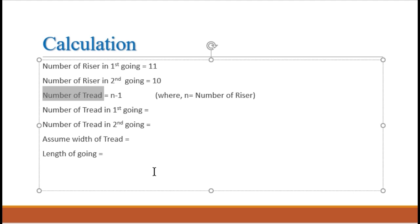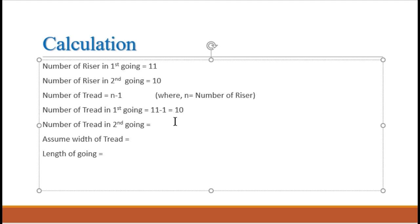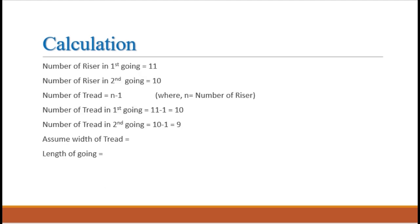Now, the number of treads in the first going. The number of treads is calculated as n minus 1, where n is the number of risers. In our first going, the number of risers is 11, so the number of treads in the first going will be 11 minus 1, which equals 10. Similarly, the number of treads in the second going will be 10 minus 1, that is 9.